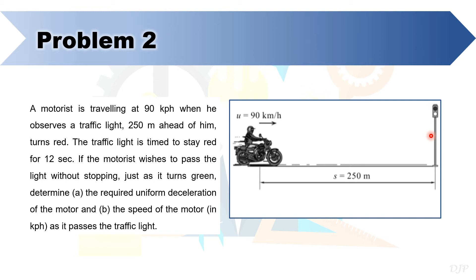Before we start with the given required solution format, let's set our reference here at the initial position of the motorist, where he is 250 meters away from the traffic light. And then let's set our convention that all vectors directed to the right as positive.